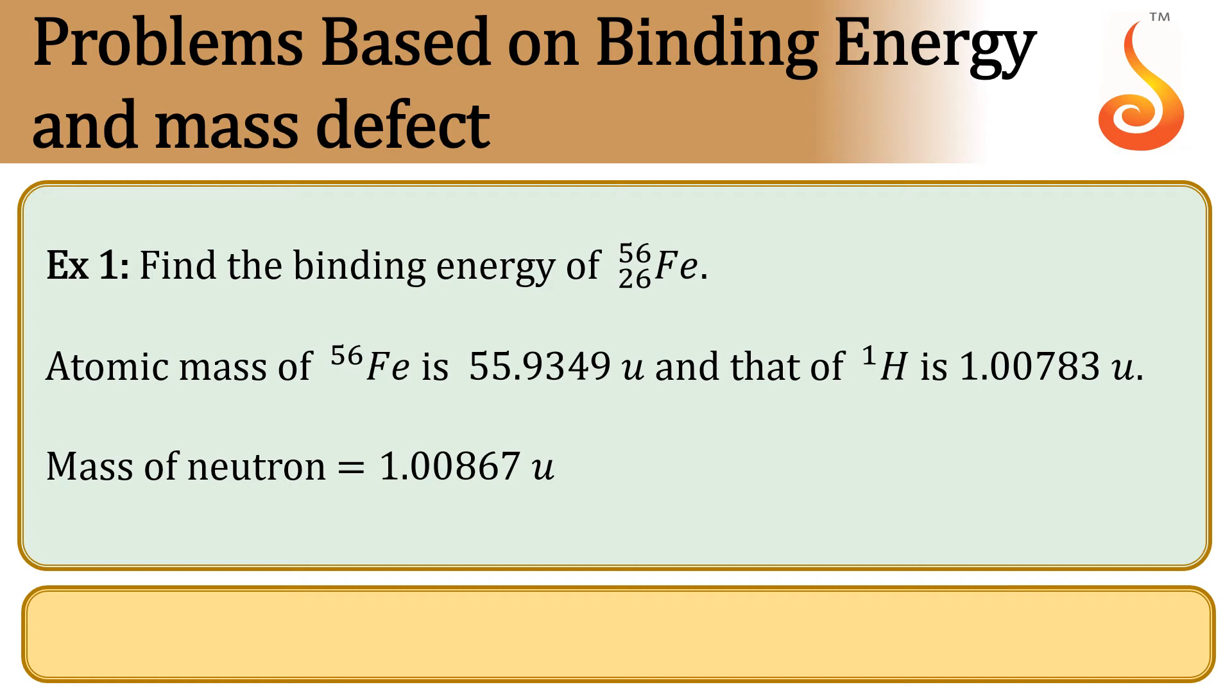Example 1: Find the binding energy of Fe-56. Atomic mass of Fe-56 is 55.9349 atomic mass units and that of hydrogen-1 is 1.00783 atomic mass units. Mass of neutron is 1.00867 atomic mass units.